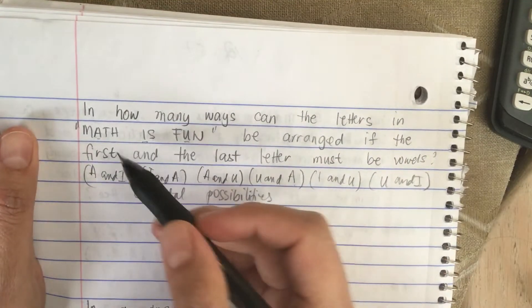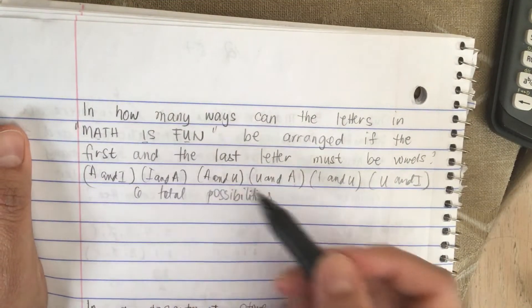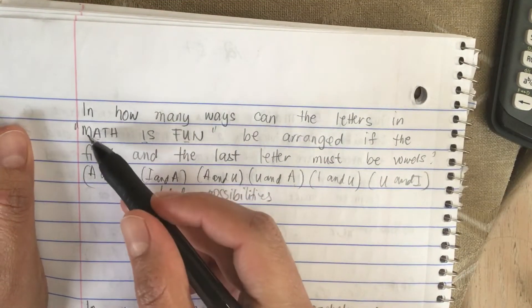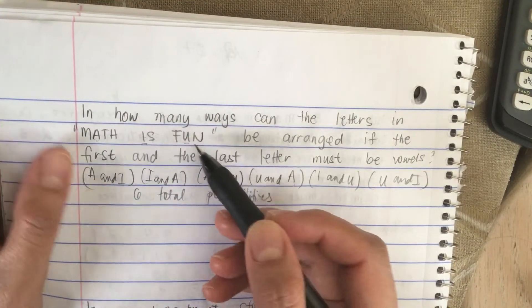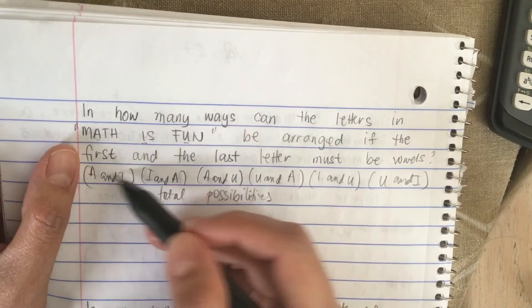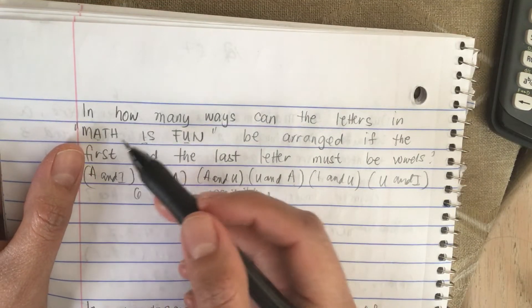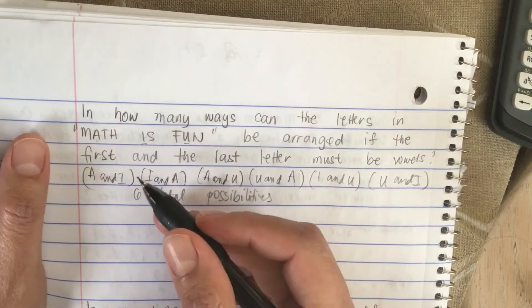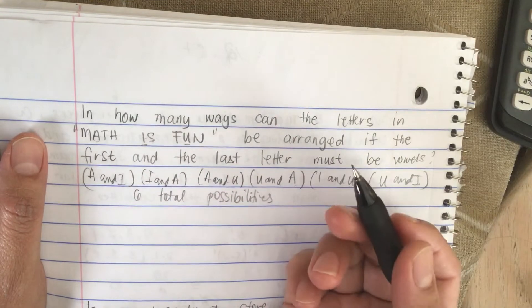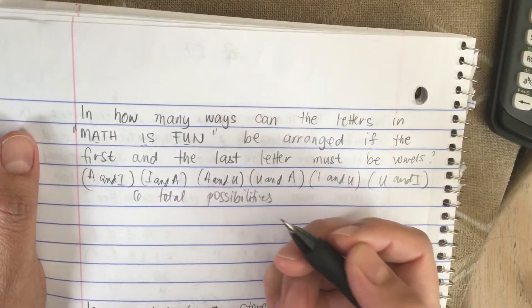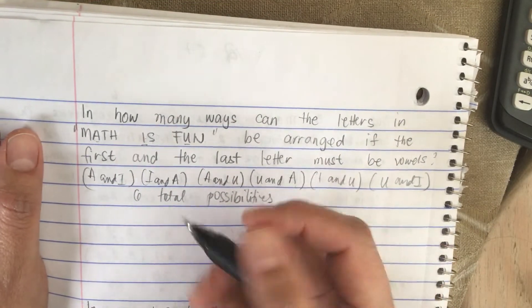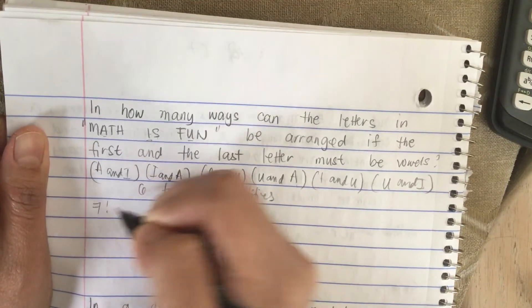So now let's arrange the other letters. So how many letters? One, two, three, four, five, six, seven, eight, nine. There are nine letters and two of them are fixed. So nine minus two is seven. So we have seven more letters to arrange, and that is seven factorial.